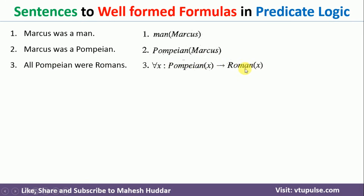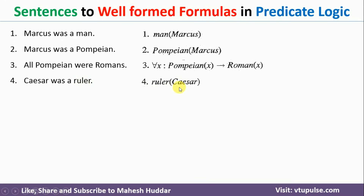Coming back to the fourth one: 'Caesar was a ruler.' Again in this particular case, ruler is one class and within that class Caesar is one entity. So that's the reason you can say ruler(Caesar). It is a quite simple fact that can be converted into predicate logic very easily.